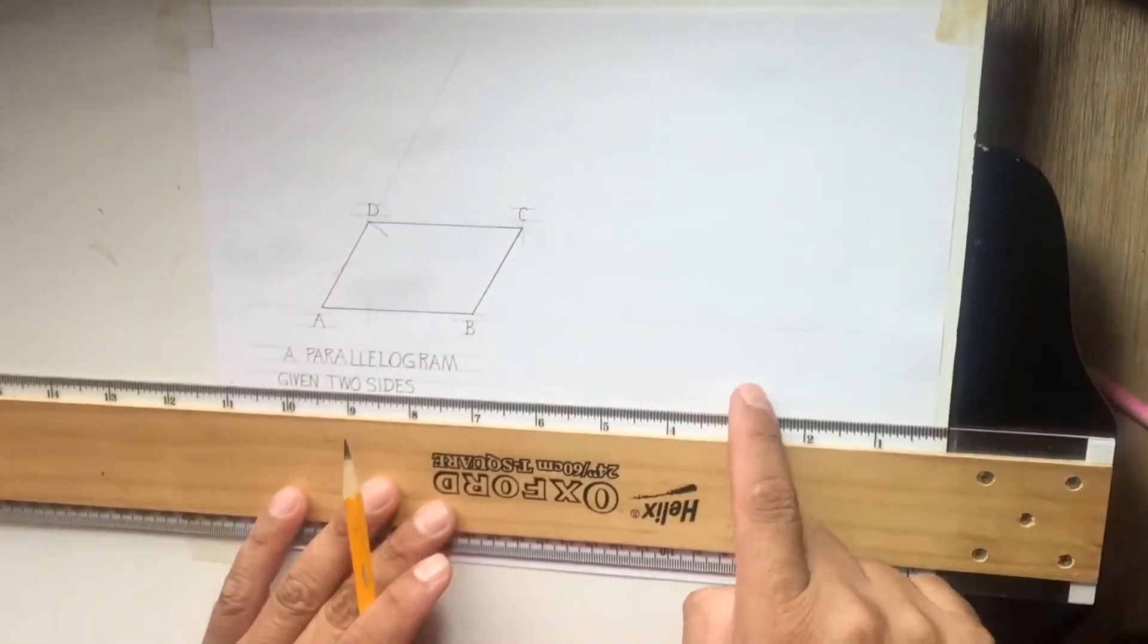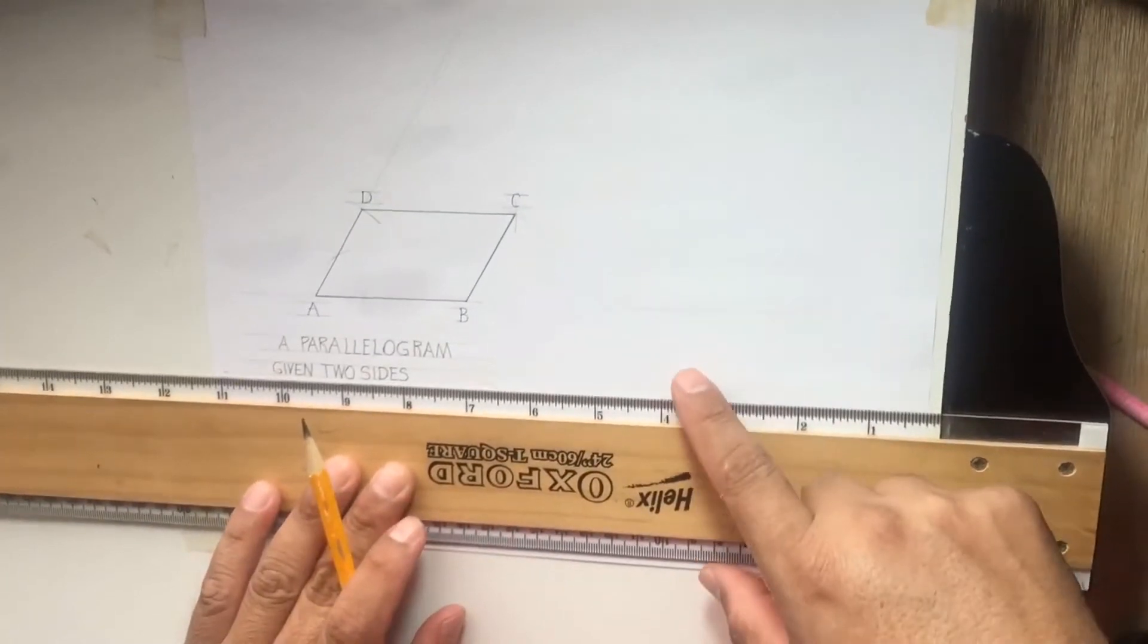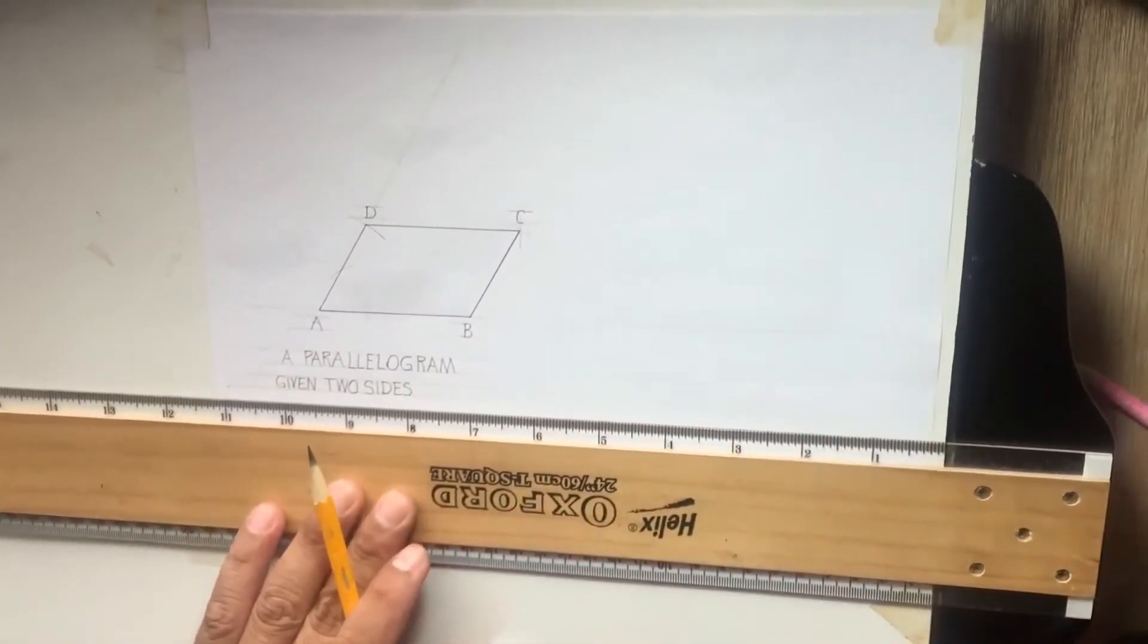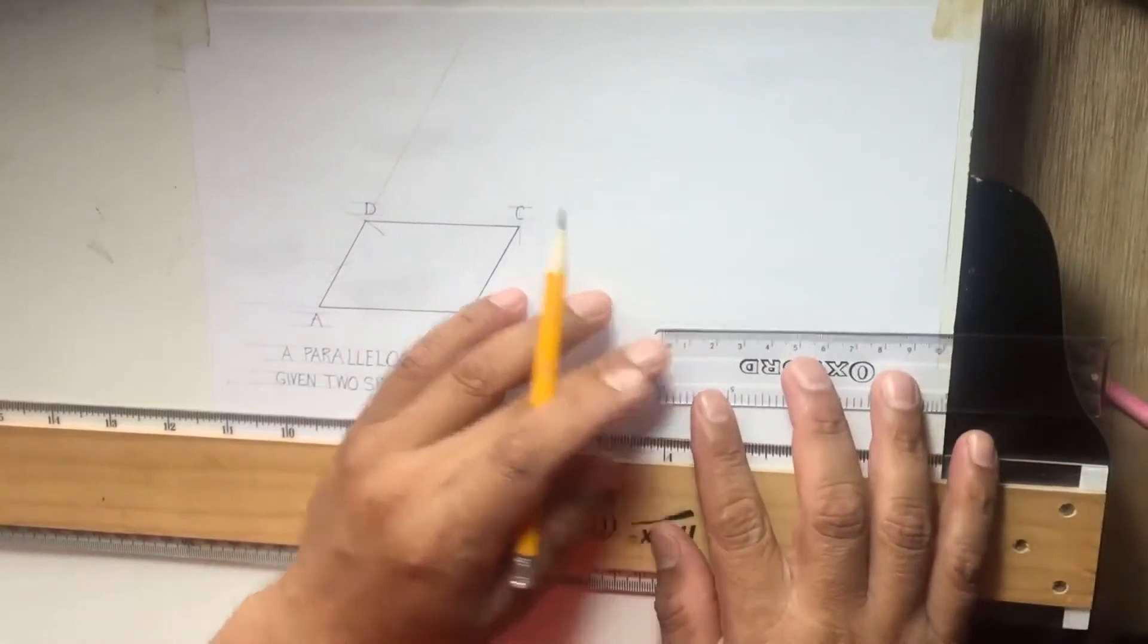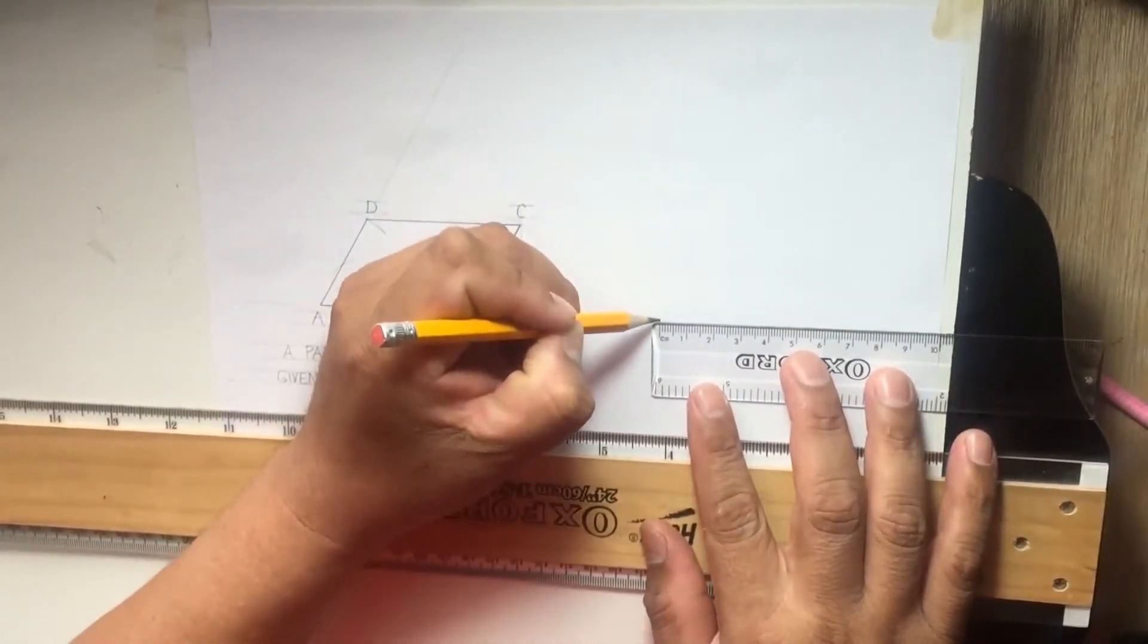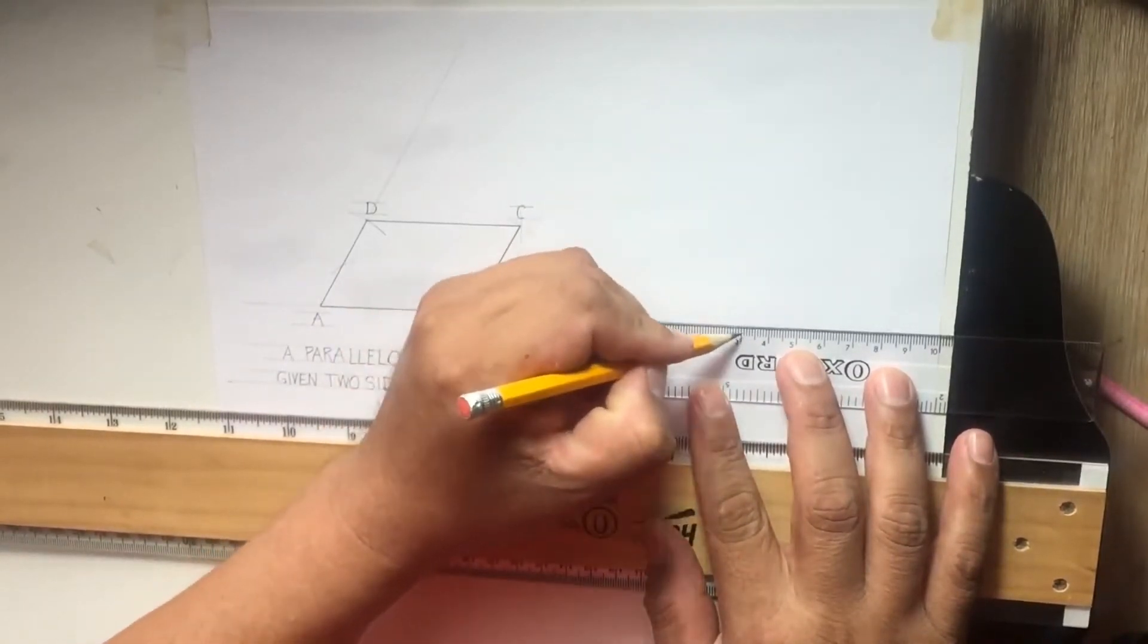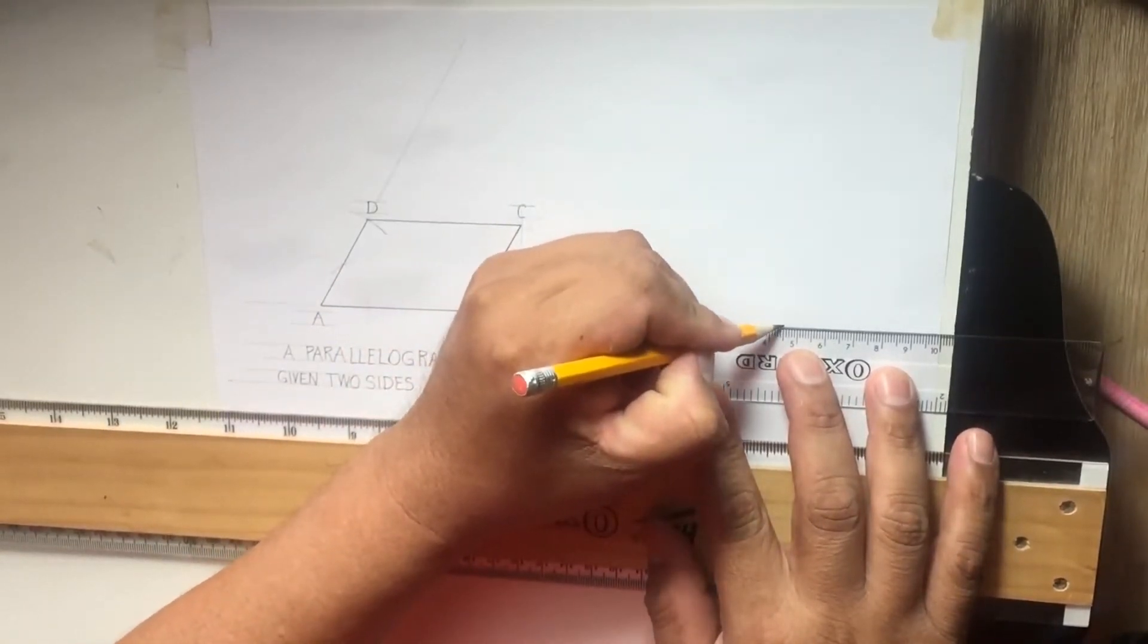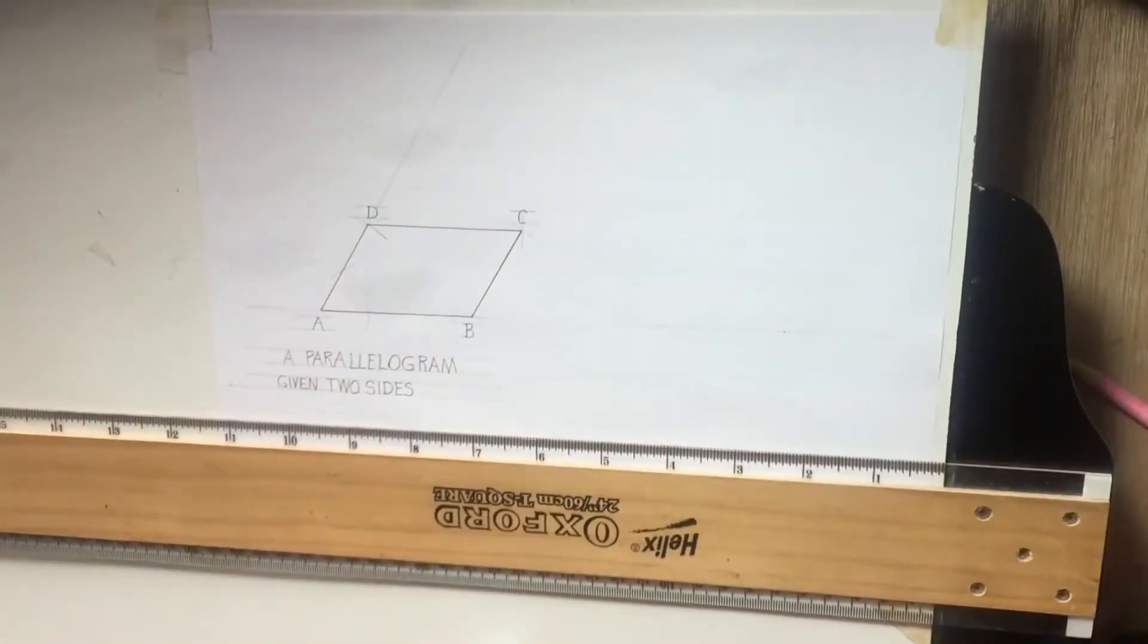I draw a baseline. On this baseline now I want to set off the length of one side, and the length of one side is 45. So I set that, 10, 20, 30, 40, 45 right.